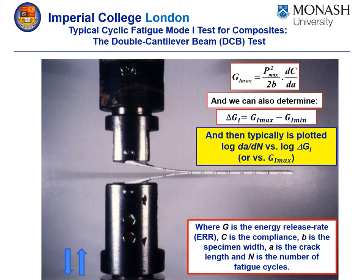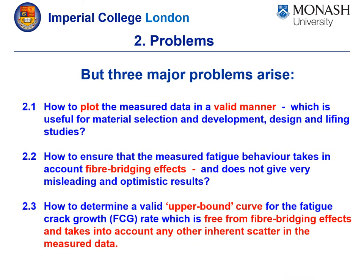We think we understand why these problems occur and this is really the theme of the current talk. Three major problems arise. Firstly, how do we plot the measured data in a valid manner, which is useful for material selection, development, design and lifing studies by industry? Secondly, how do we ensure that the measured fatigue behaviour takes into account fibre bridging effects, since fibre bridging tends to develop behind the crack and can give very misleading and optimistic results? Thirdly, how to determine a valid upper bound curve for the fatigue crack growth rate, which is free from fibre bridging effects and takes into account any other inherent scatter in the measured data.